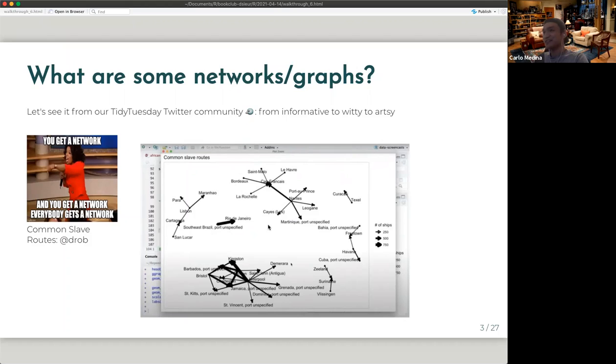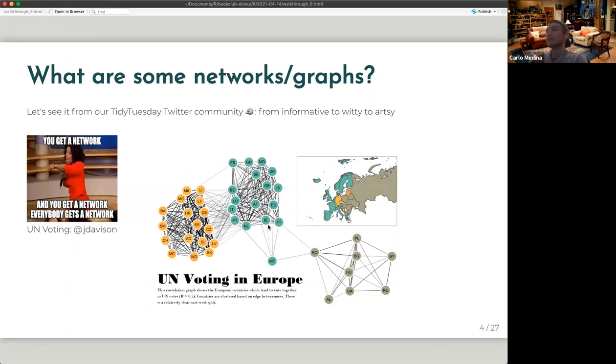I did not go away from our Tidy Tuesday Twitter community and I just took some network submissions. So this is a network about common slave routes, basically connecting source and destination. Another example of a network is a co-occurrence for this particular submission. It looked at voting records of Europe countries with regards to the UN. And every time they vote together, that measures like the link. And then this graph basically visualizes certain groups within Europe that are voting more often than others.